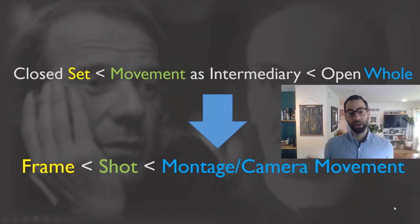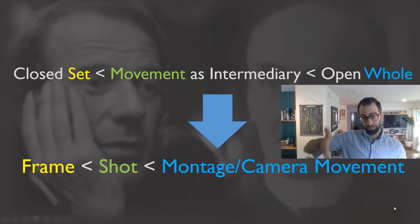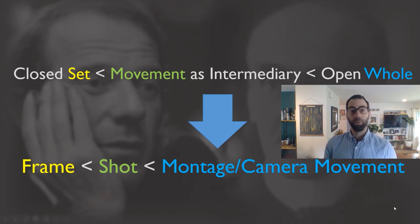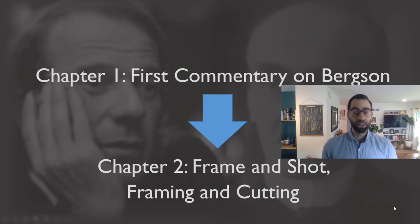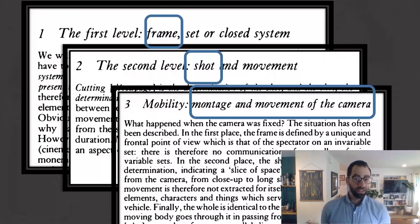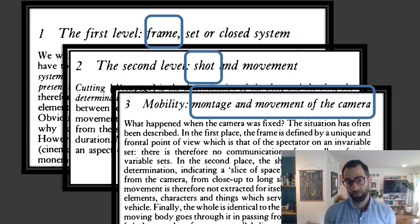Here's how we get from the philosophical stuff to the film-oriented stuff in chapter two. The three terms — set, movement, and whole — map onto three cinematic terms: frame, shot, and montage or camera movement. Chapter one is all about Bergson's philosophy; chapter two is about the basic components of cinematic language. The framework is: frame corresponds to set or closed system; shot corresponds to movement; and montage or camera movement corresponds to whole.